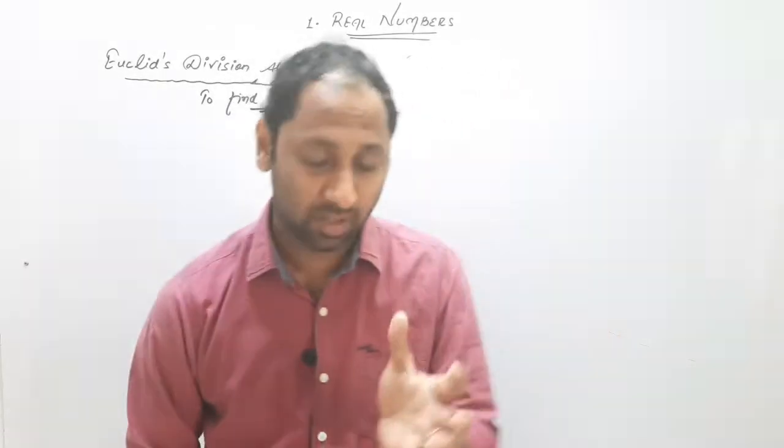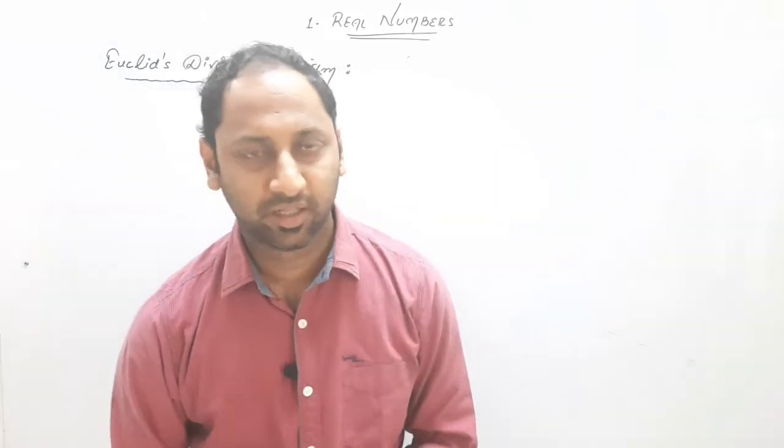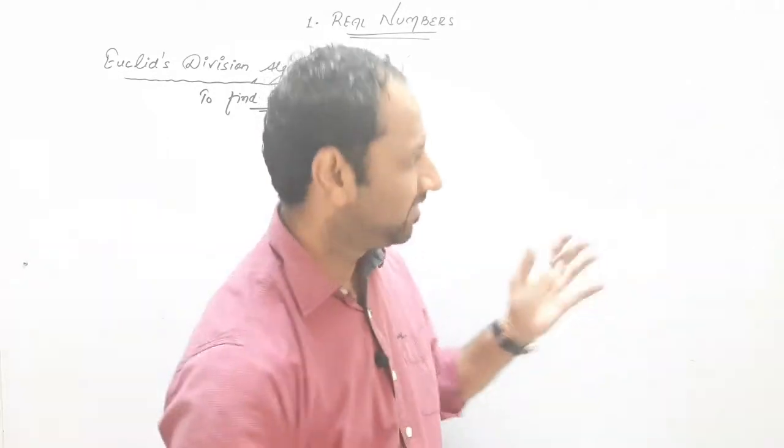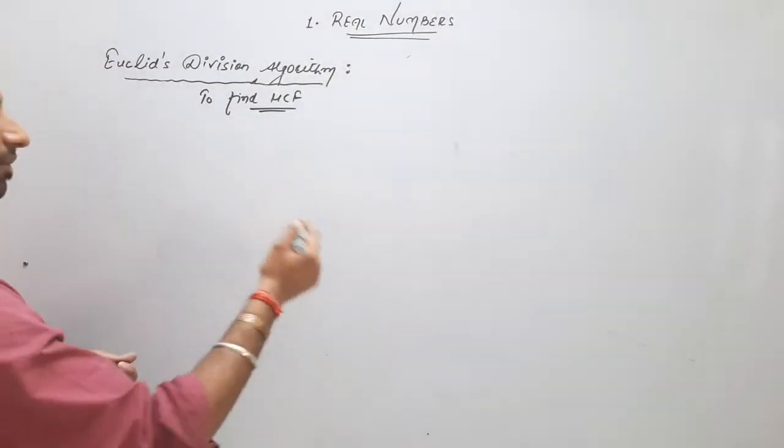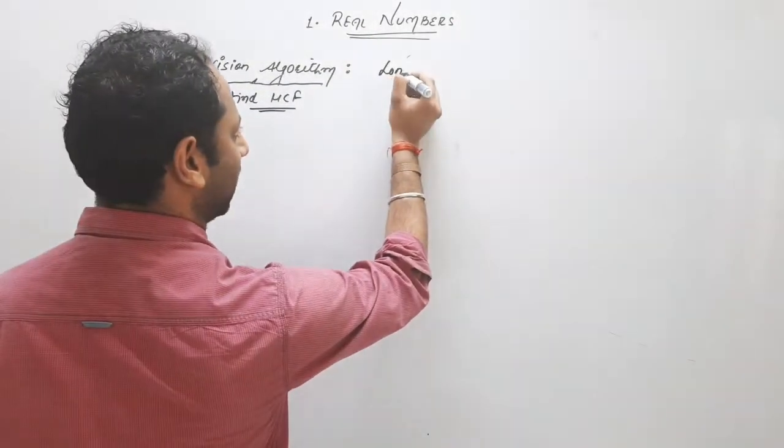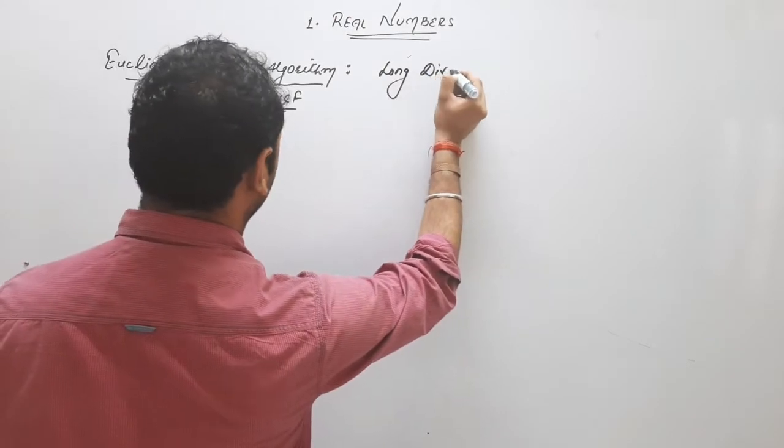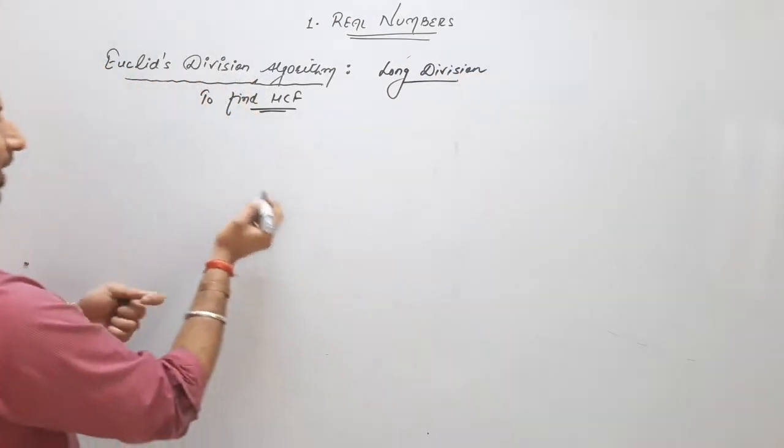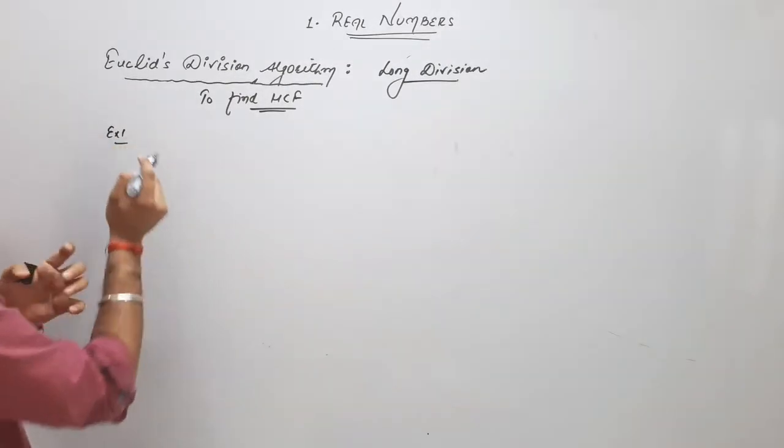Long division method, common division method, prime factorization method, if it is in your mind. That is our Euclid. How? I am taking one example to make it more clear.